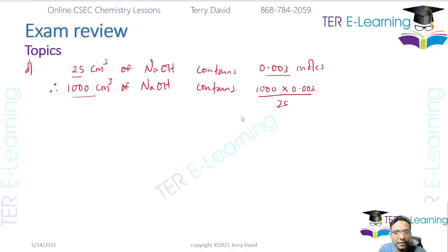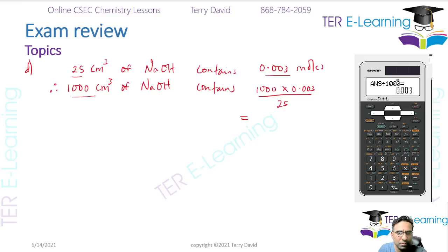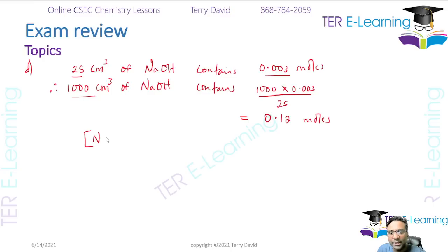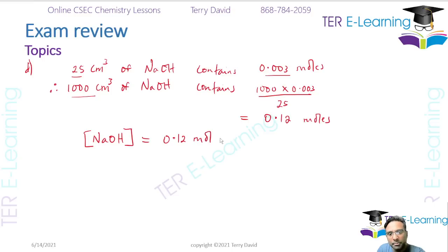Dividing by 25, what you get is 0.12. So the concentration of sodium hydroxide is 0.12 mol per dm³. By the way, if you don't want to write the word 'concentration', in chemistry if you put sodium hydroxide in square brackets that actually means concentration.